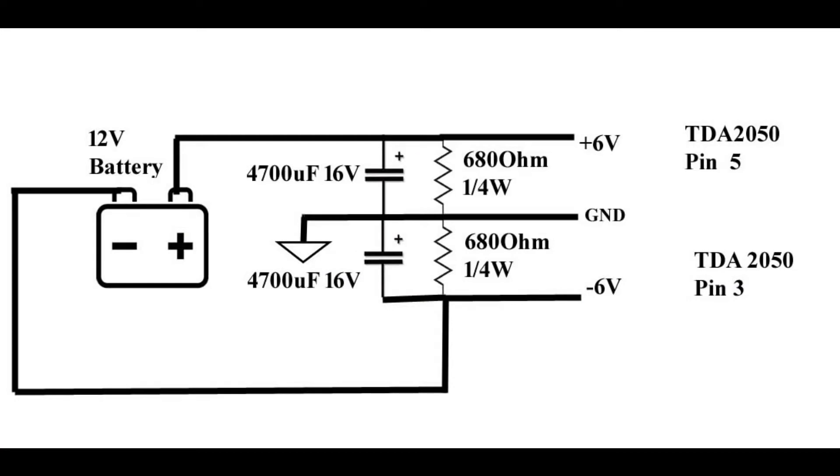Here it is: a potential divider consisting of equal resistances connected in series. For the voltage stability, two capacitors are added. Let's make it and power it up.